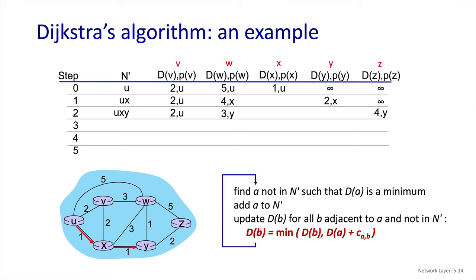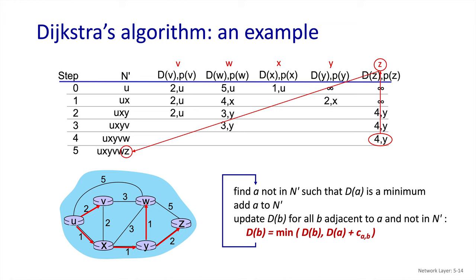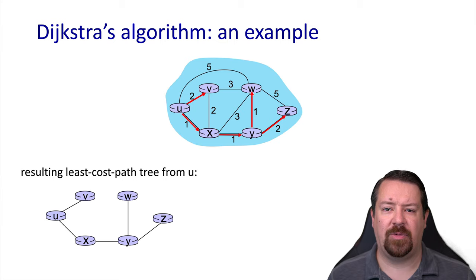Looking at our remaining costs, v has the lowest path cost, so we add that to n' next. What we're showing in the lower left is the tree that includes all the least cost paths that u will use to send traffic to the rest of the network. Some links won't get used because they don't fall on any of the least cost paths, though those links might be used by other sources. v doesn't give us any reduced cost way to get to w or z, so those values remain the same. We then add w to n', but it doesn't update our cost to z. Lastly, we add z to n'. We've now found the least cost path from u to every destination, forming our least cost path tree in the lower left.